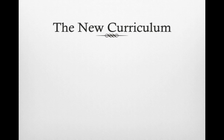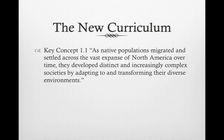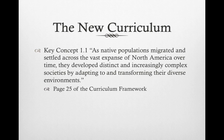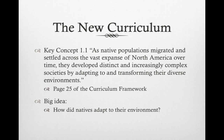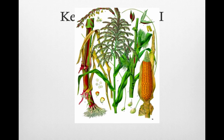Let's take a look at what Key Concept 1.1 says: 'As native populations migrated and settled across the vast expanse of North America, over time they developed distinct and increasingly complex societies by adapting to and transforming their diverse environments.' Keep in mind Native Americans were vastly different from tribe to tribe. This is straight out of page 25 of the new curriculum framework. The big idea for this video is: how did natives adapt to their environment?